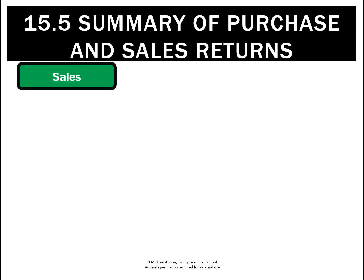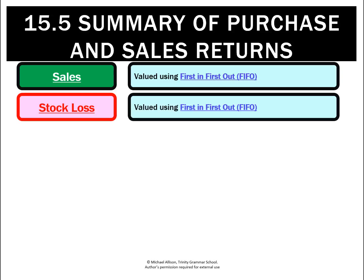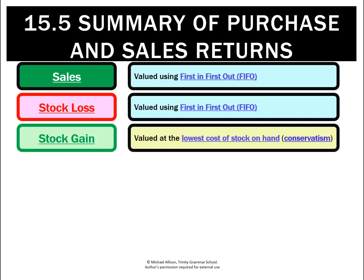This slide summarizes everything we know about valuing stock. Whenever we sell stock we have a cost of sale — we value it using first in, first out, or FIFO. When we recorded a stock loss, going back to unit three, we again valued that at FIFO. With a stock gain, we didn't apply FIFO. Instead, we used the lowest cost of stock on hand, in order to fulfill the conservatism principle.